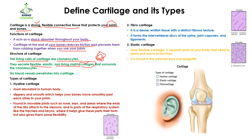An important thing is that no blood vessels can penetrate into the cartilage. Blood vessels are going to move around the cartilage, but they cannot move into it. Now, talking about the types of cartilage, there are three types.